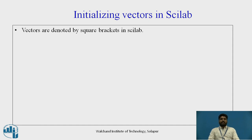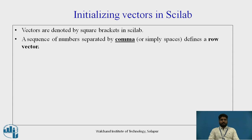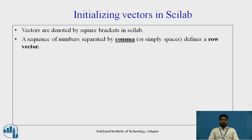Vectors are denoted by square brackets in Scilab. You need to remember this point: whenever you want to input a vector, square brackets are used. A sequence of numbers separated by a comma or simply a space defines a row vector.